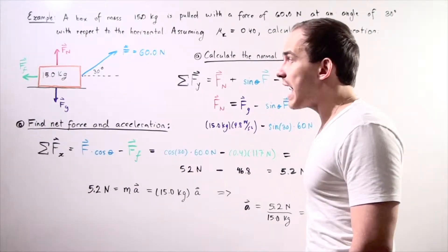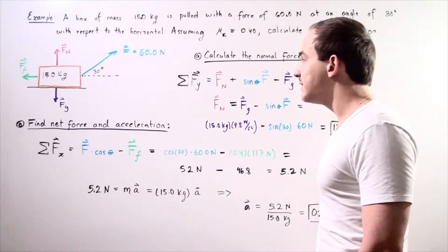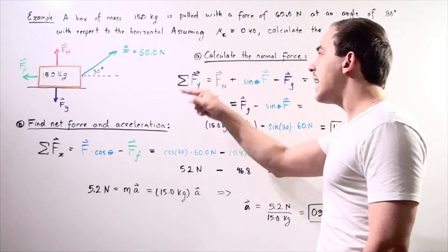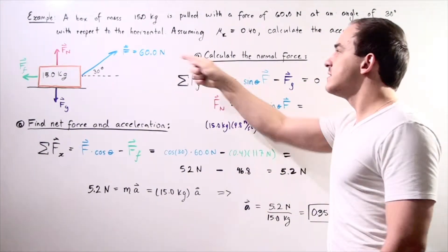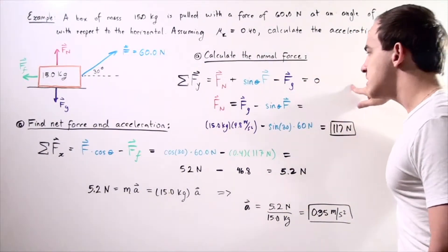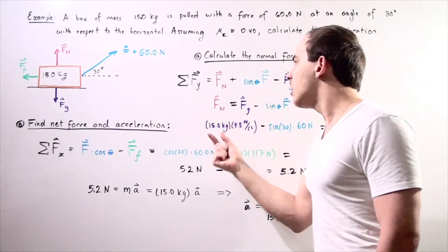We choose upward along the y axis to be positive and downward to be negative. We have two forces acting up and one force acting down. The normal force plus the sine of the angle multiplied by F, 60 newtons, minus the force of gravity equals 0.